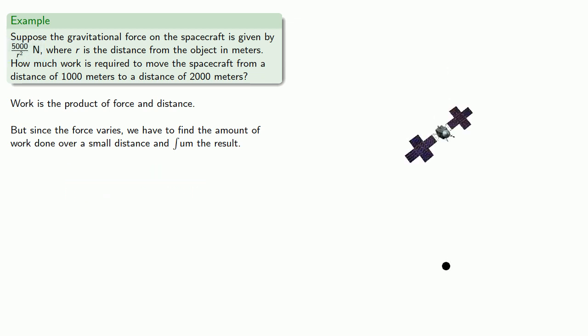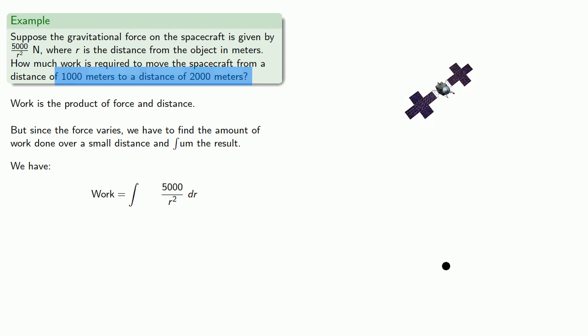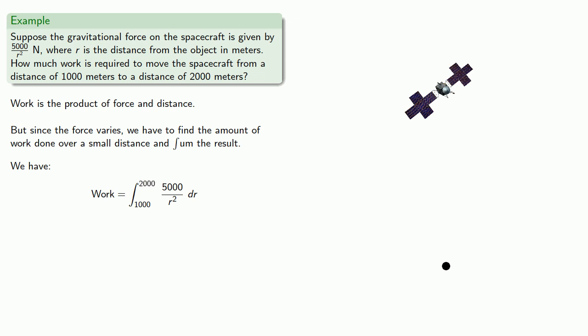So suppose we're at some distance r, and we move out a small bit dr. The amount of work we do is going to be the force, 5,000 over r squared, times the distance dr. And now we want to sum this work done, and since our differential variable is r, we want that sum to go from 1,000 meters to 2,000 meters. So our limits of integration will be from r equals 1,000 to r equals 2,000. And so this is a nice simple definite integral, and we can evaluate it.